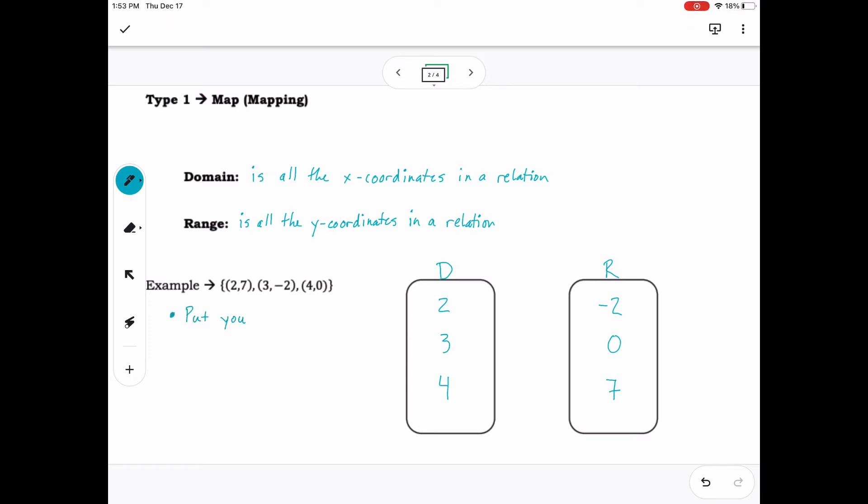Then list all your x-coordinates in the domain oval from smallest at the top to largest at the bottom. Do the same for your y-coordinates in the range oval. Use arrows to connect your x's to their respective y's. So 2 goes to 7, 3 goes to negative 2, and 4 goes to 0.